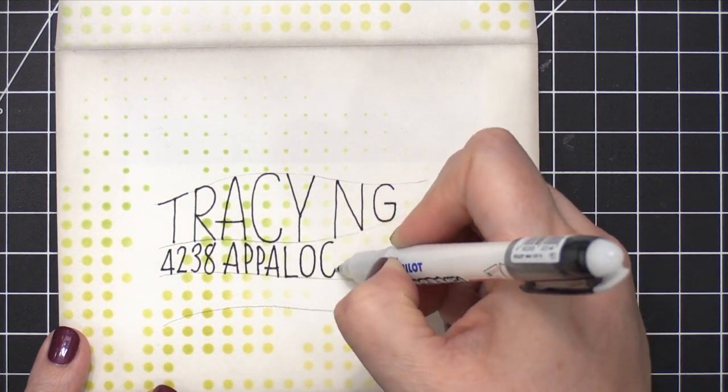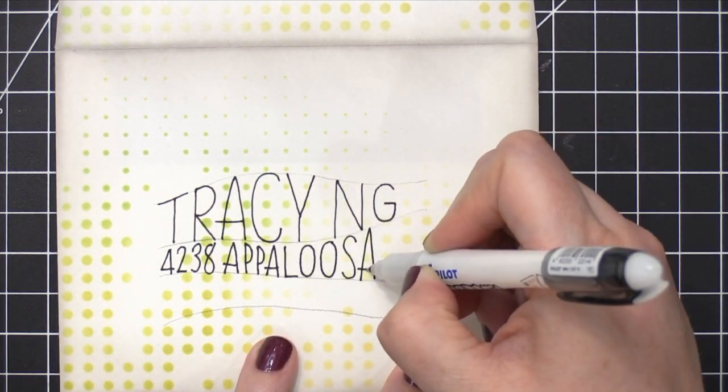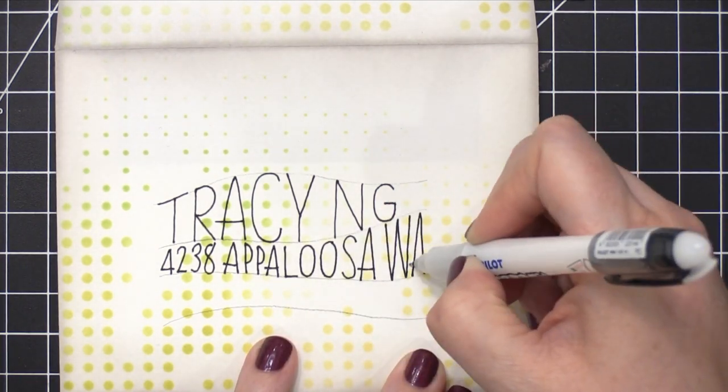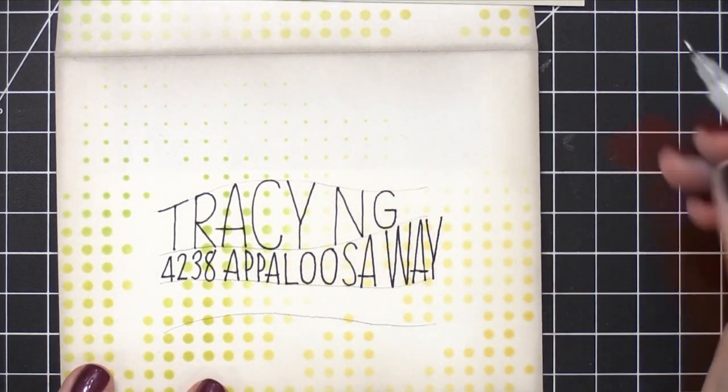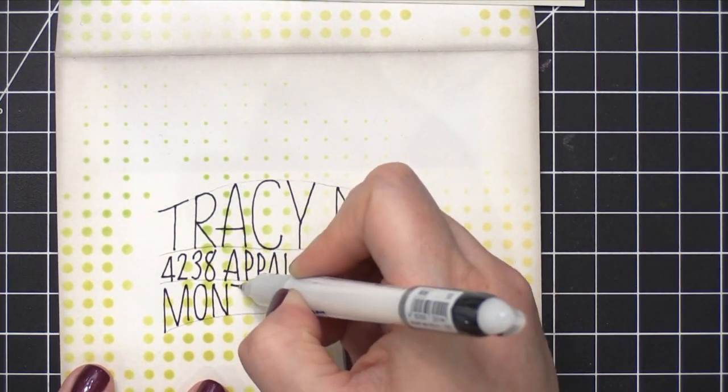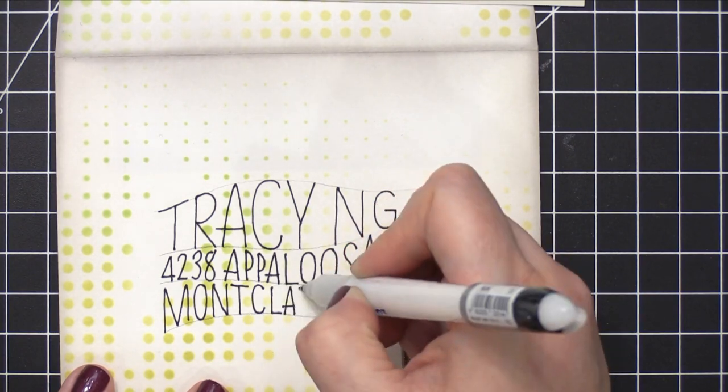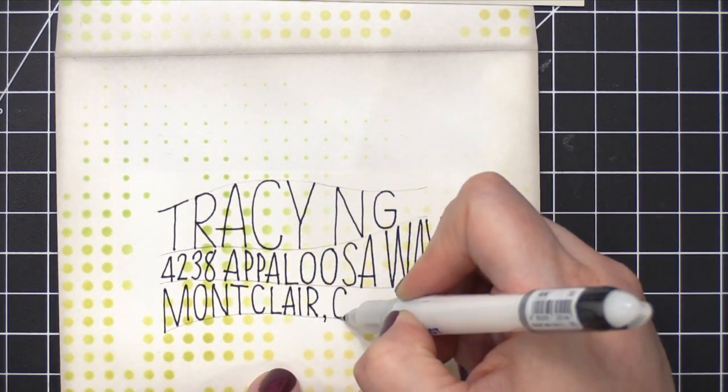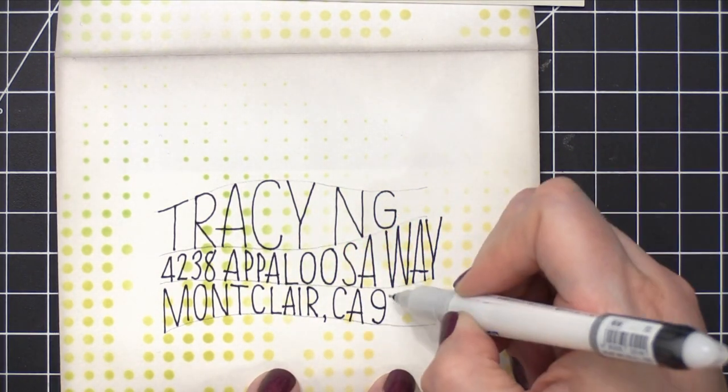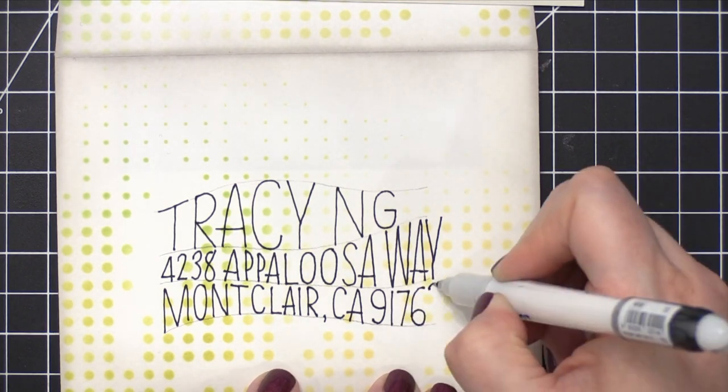So even if your envelope comes into contact with some moisture, whether that be snow or rain or just anything like that, the address will remain and it will be delivered to your recipient. So I really love this pen specifically for that reason. So I'm just finishing off the address here, and a big thank you to Tracy for giving me permission to use her address on this envelope.